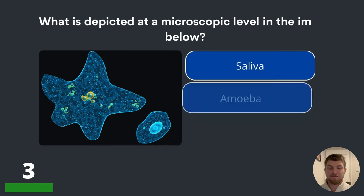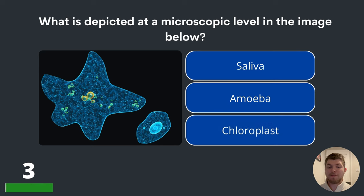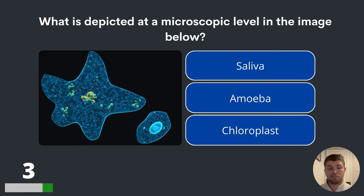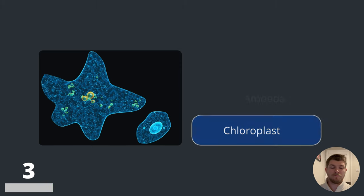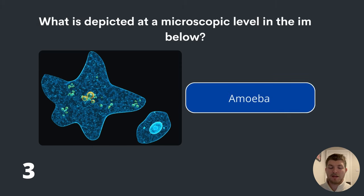Question three. What is depicted at a microscopic level in the image below? Saliva, amoeba or chloroplast? The answer is amoeba.